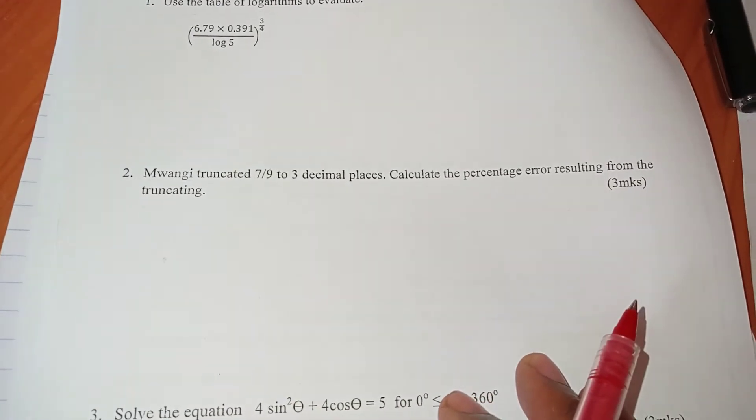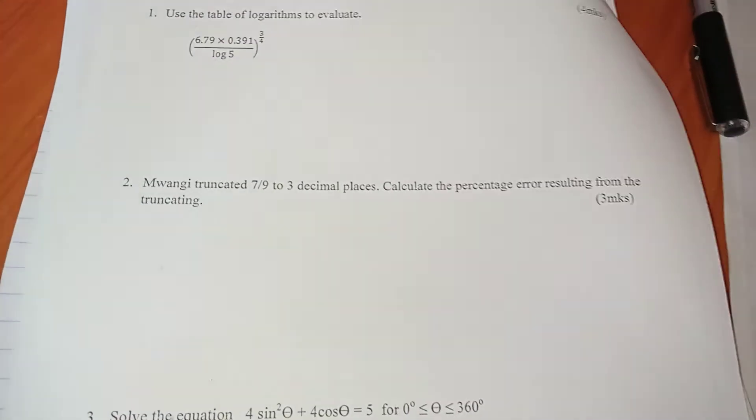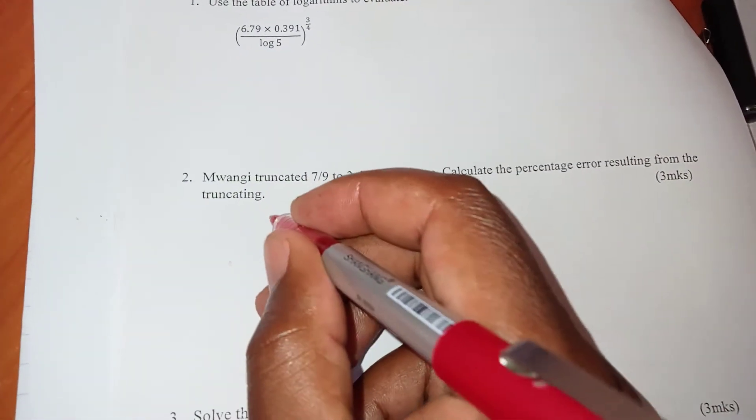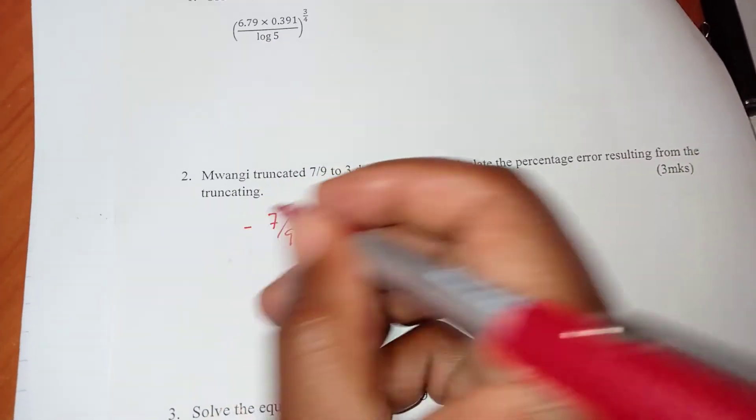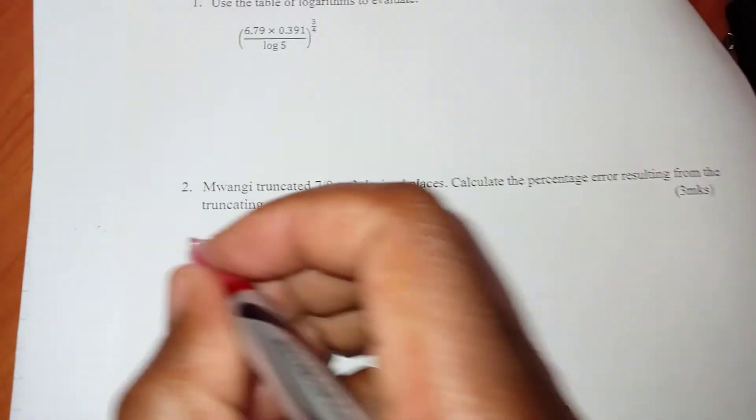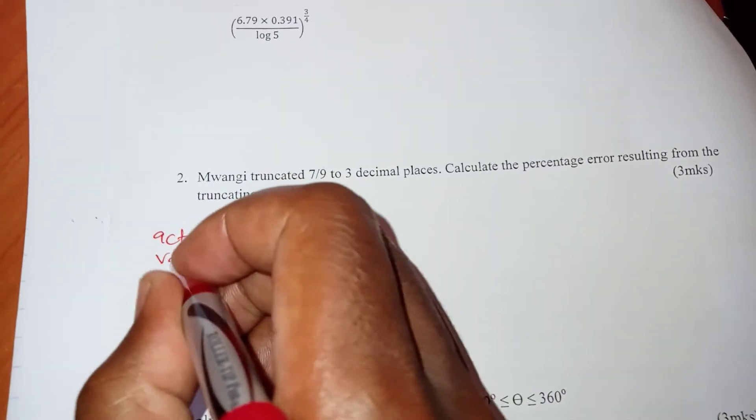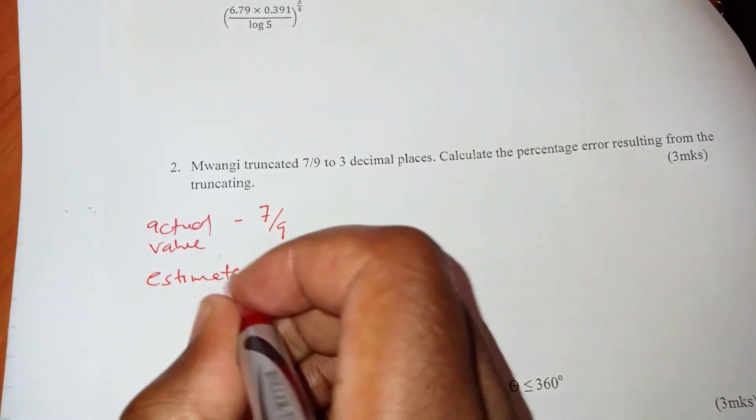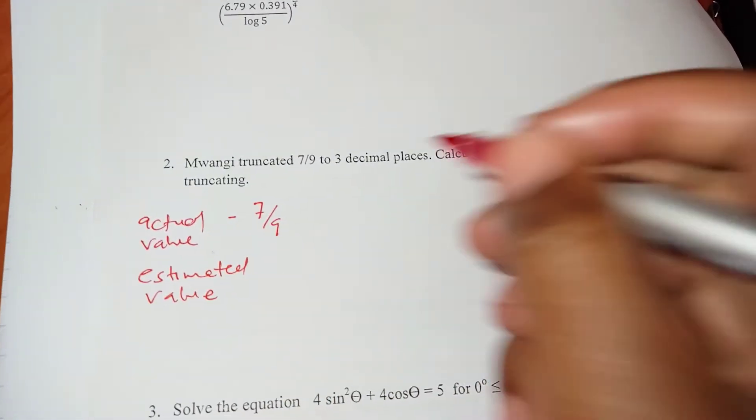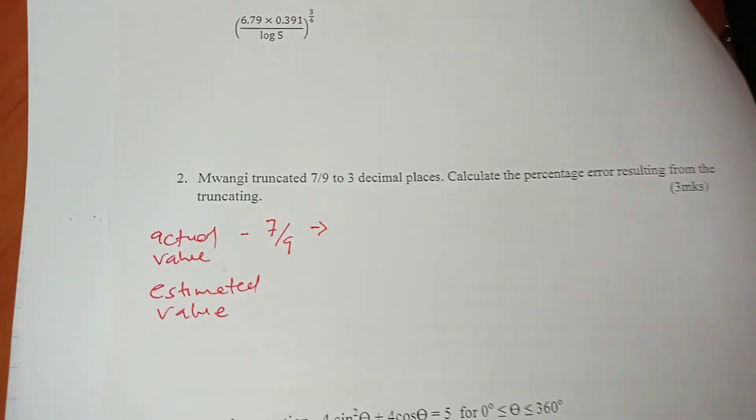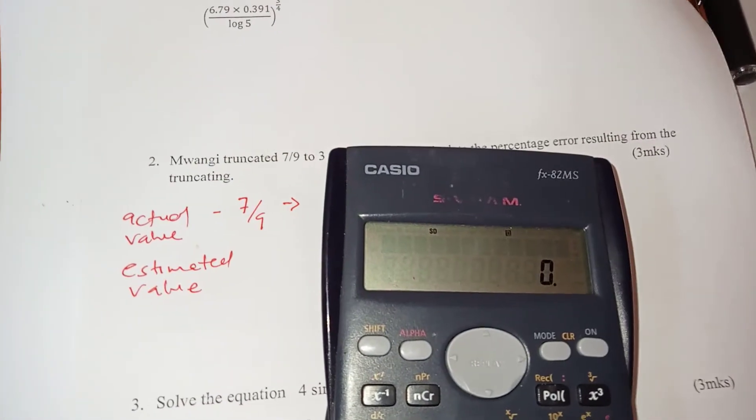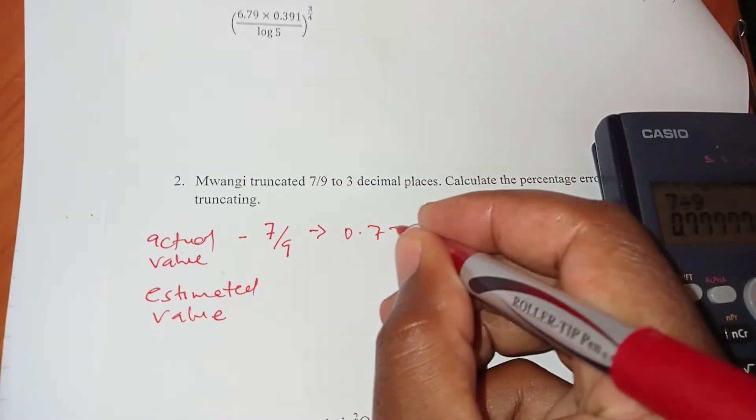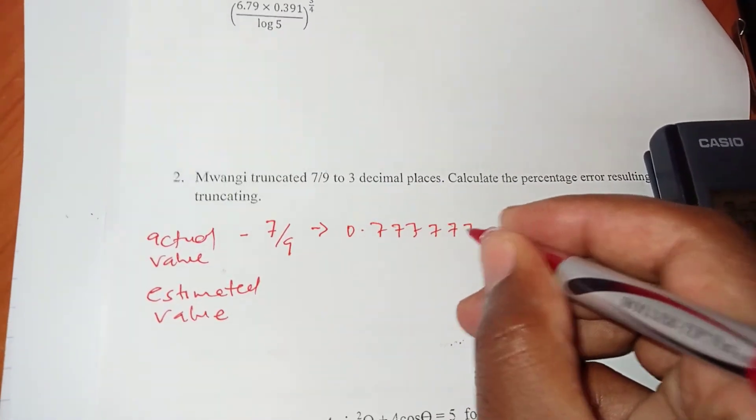We have Muangi truncated seven over nine to three decimal places. Calculate the percentage error resulting from the truncating. So to solve this one again, we do the same thing here. We take seven over nine as our actual value. This is the actual value. The estimated value - we first of all need to write this one in decimal form so that we can know which point we are going to chop off the digits.